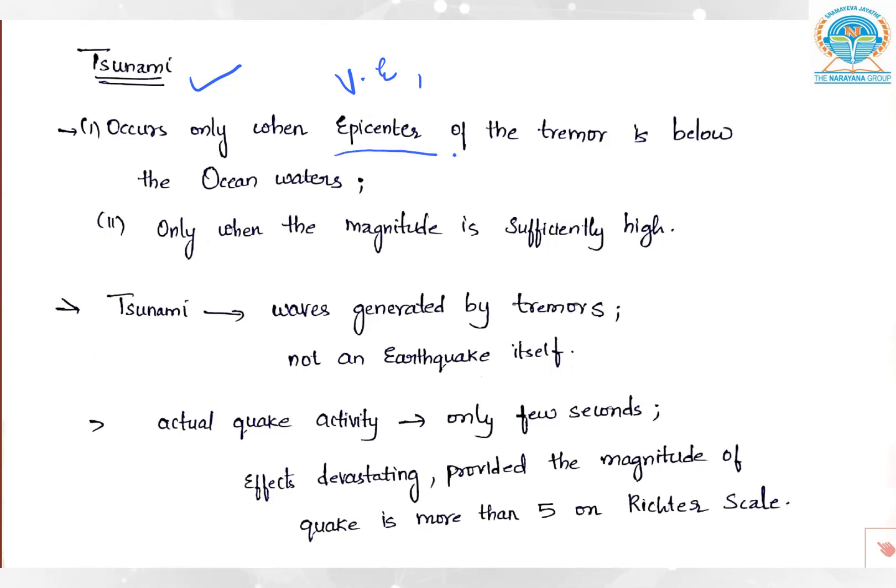It happens when the epicenter of the tremor is below the ocean waters. What is the epicenter? The place on the surface where it experiences the waves. When we are talking about waters, if the epicenter is below the ocean waters, there the tremor is happening.